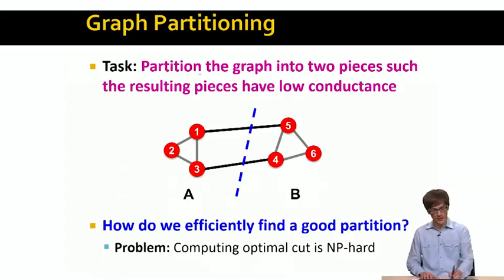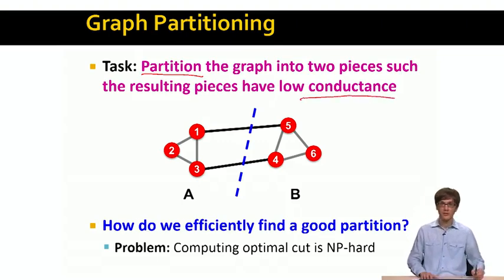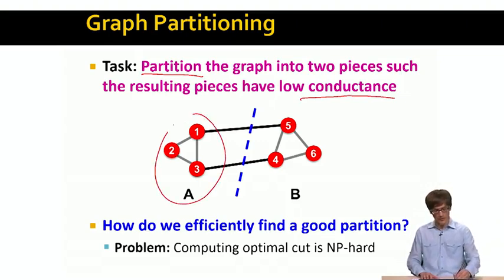The way we will think about this is we will define the problem as we want to partition the graph into two pieces such that the resulting pieces have low conductance. We have already defined the notion of conductance, which intuitively can be thought of as for a given set of nodes.